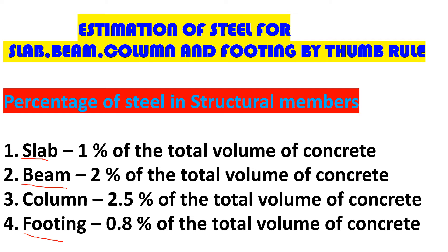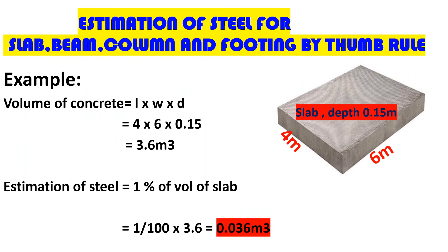We are using a slab. Here we have a length of 6 meters, a width of 4 meters, and a depth of 0.15 meters. The first thing we need to do is calculate the volume of concrete in the slab: length × width × depth, that is 6 × 4 × 0.15, giving us 3.6 cubic meters.